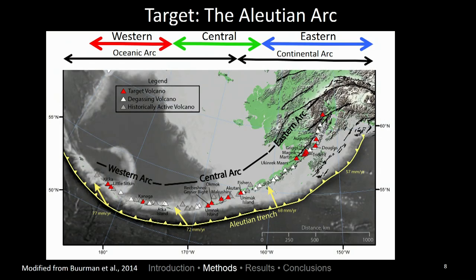Our target is the Aleutian arc. It's home to 54 historically active volcanoes, each marked by a triangle. The red triangles represent volcanoes where we have carbon isotopic measurements in the volcanic gases. This arc is also notable because it has significant along-strike variations in subducted inputs, in particular the subducted sediment fluxes, and also along-strike variations in convergence angle. Relevant to this talk is that the crust varies — the Aleutian arc is built primarily on continental crust in the east, where we might expect a greater contribution of crustal carbon, while the rest of the arc is built primarily on oceanic crust, where we might expect crustal carbonates to be a minor factor.